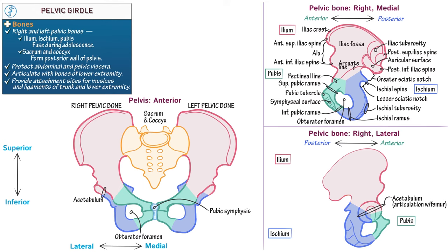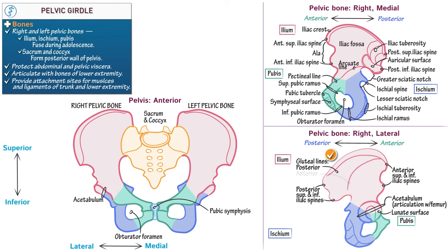In our diagram, indicate the C-shaped lunate surface, which is smooth from articulation with the femoral head. For context, relabel the iliac spines: anterior superior and inferior iliac spines, and posterior superior and inferior iliac spines. Then show that the lateral surface of the ala, also called the gluteal surface, is marked by the posterior, anterior, and inferior gluteal lines. These raised ridges indicate where the powerful gluteal muscles of the posterior hip attach. Relabel the greater and lesser sciatic notches and the ischial tuberosity. On the pubis, indicate the pubic tubercle.